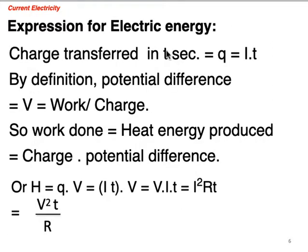By definition of electric current, we know I is Q by T, so charge transferred in T seconds will be Q equal to I into T. By definition of potential difference, we have V equal to work upon charge, so work done will be V into Q.